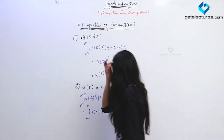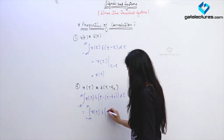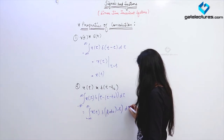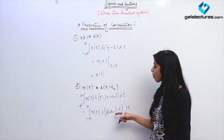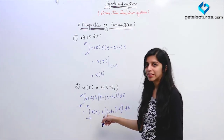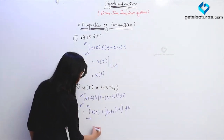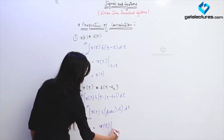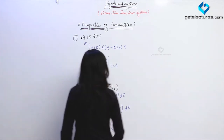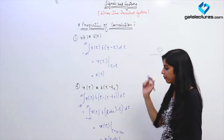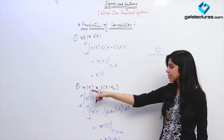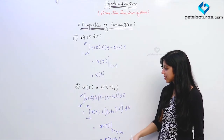Rewriting as δ(T + T₀ − τ), this impulse occurs at τ = T − T₀. Therefore the result is X(τ) evaluated at τ = T − T₀, which equals X(T − T₀). So if there is a shift of T₀ in the impulse function, we obtain the same shift in the input signal X(T), giving X(T − T₀).